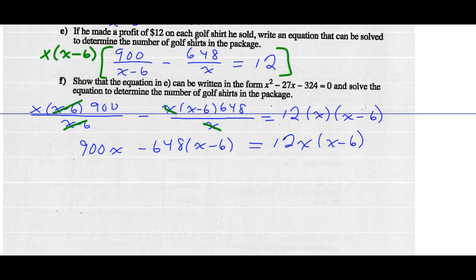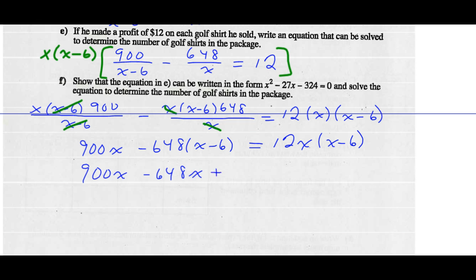So I no longer have any denominators. I can expand the brackets and collect like terms to get a quadratic equation. So 900X minus 648X, and negative times negative is positive 648 times six gives 3888. That equals 12X squared minus 72X.